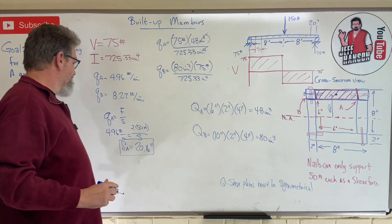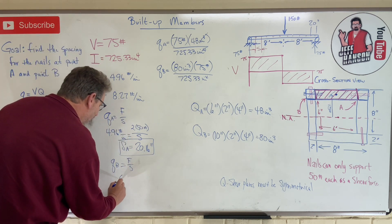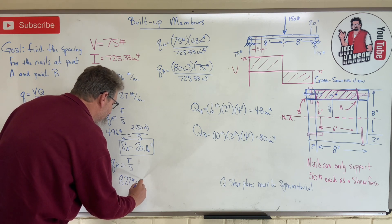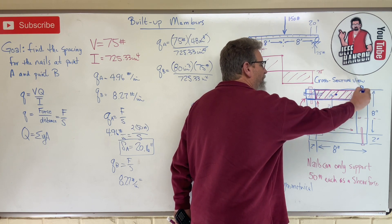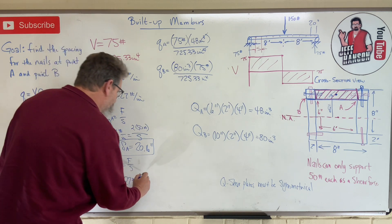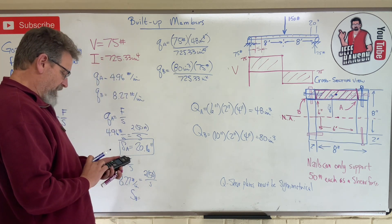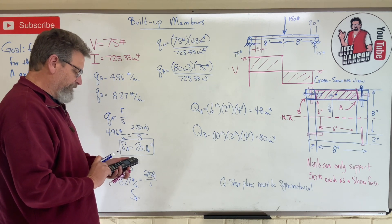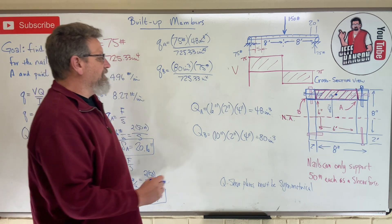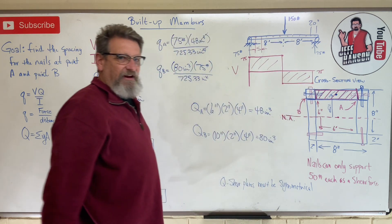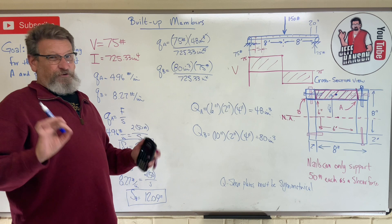For point B: q_B equals 8.27 lb/in equals F over s. Again, I had one nail at B plus an assumed second nail on the other side, so F equals 2 times 50 equals 100 pounds. Therefore s_B equals 100 divided by 8.27 equals 12.09 inches. At location B — along the top edge of the beam — I need to put a nail every 12.09 inches to support that load. That's the minimum spacing; you could go closer for a factor of safety.